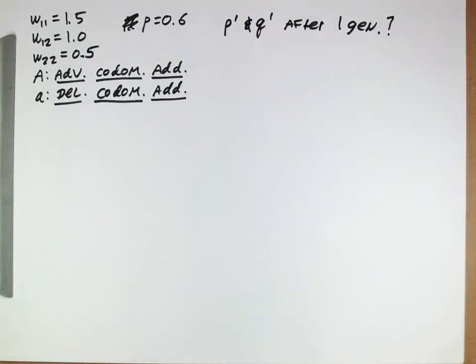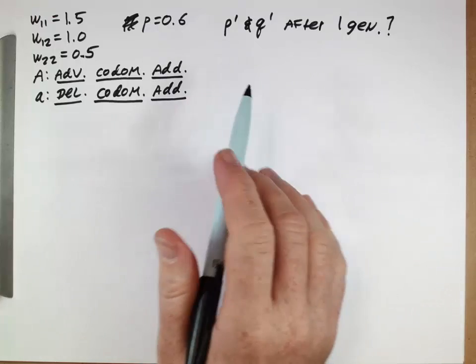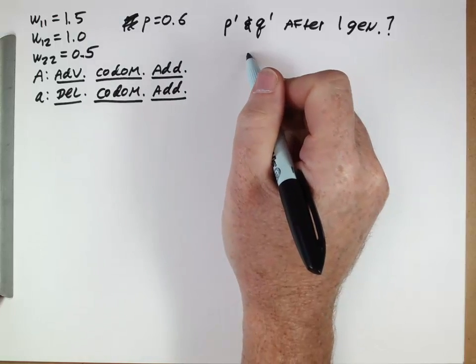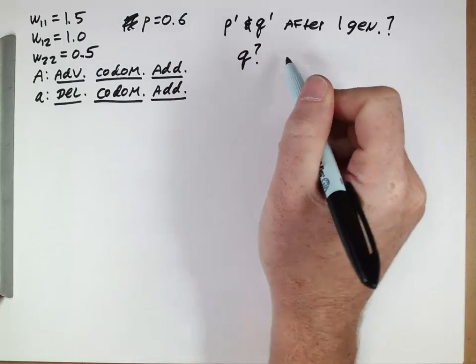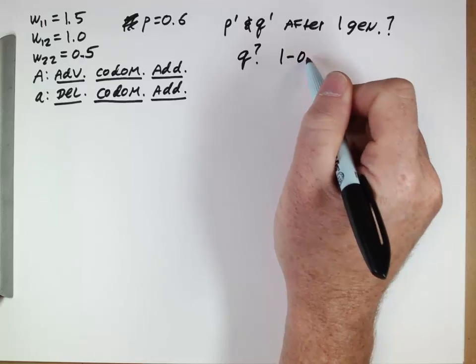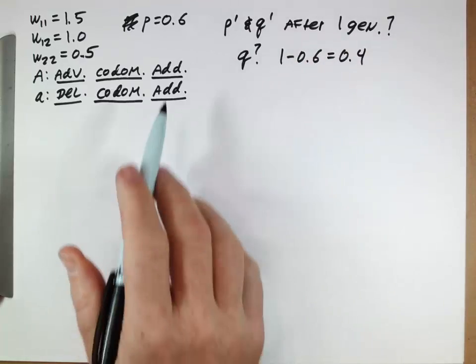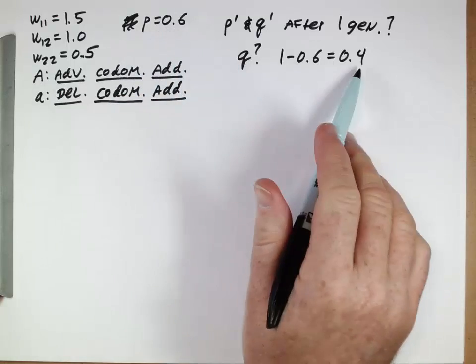So the very first thing that we want to do is we know that we're going to be using some equations later that are going to have p's and q's. The very first thing to do is to figure out what q is. And so q is given by 1-p, 0.4. So we have p of 0.6, q of 0.4.